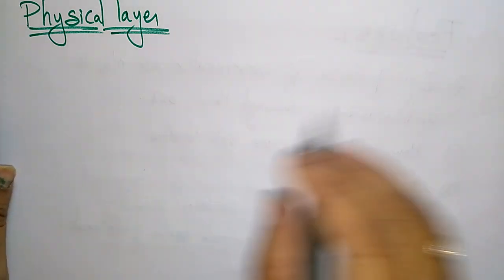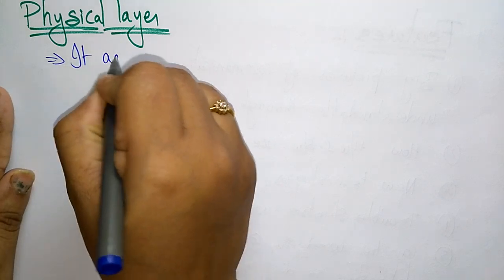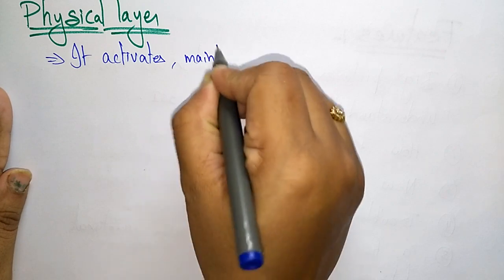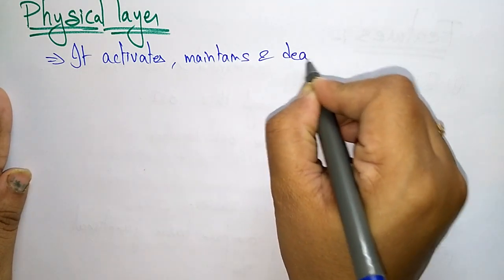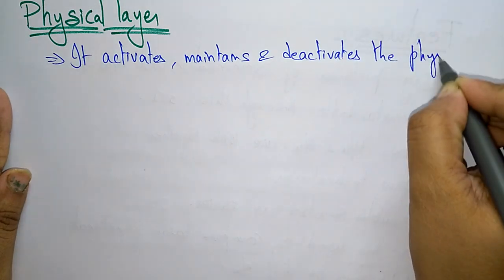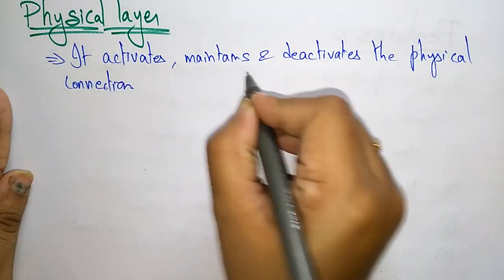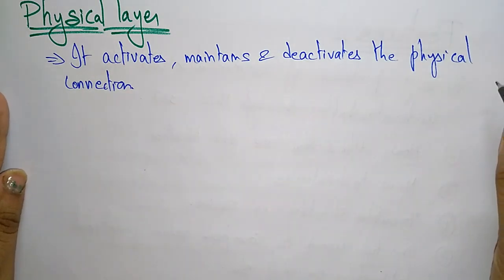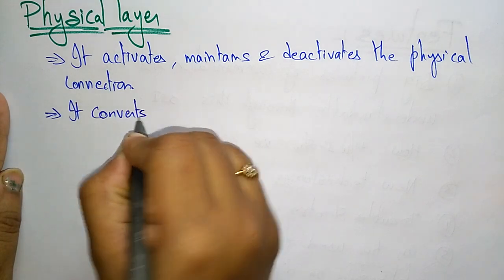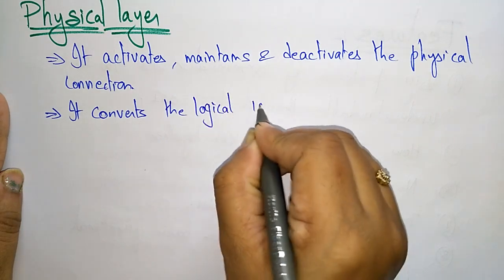The physical layer is the lowest layer of the OSI model. It activates, maintains, and deactivates the physical connection. Also, this physical layer converts the logical ones and zeros — the logical ones and zeros that the data link layer sends in the form of frames.